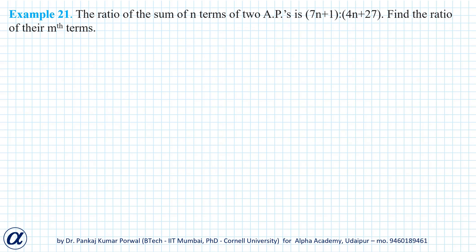In this question, we are given the ratio of sum of n terms of 2 APs as (7n + 1) to (4n + 27), and we want to find the ratio of their mth terms.